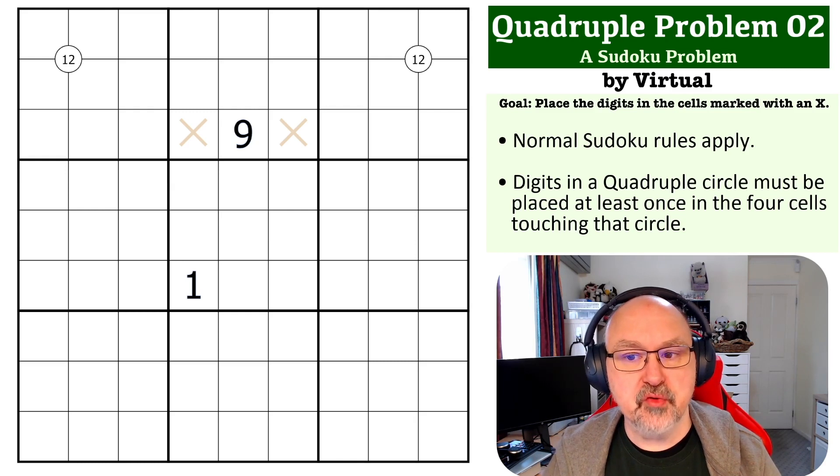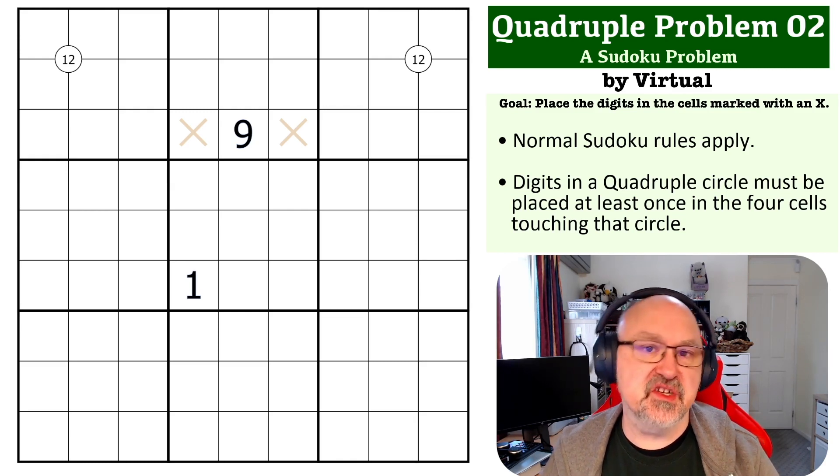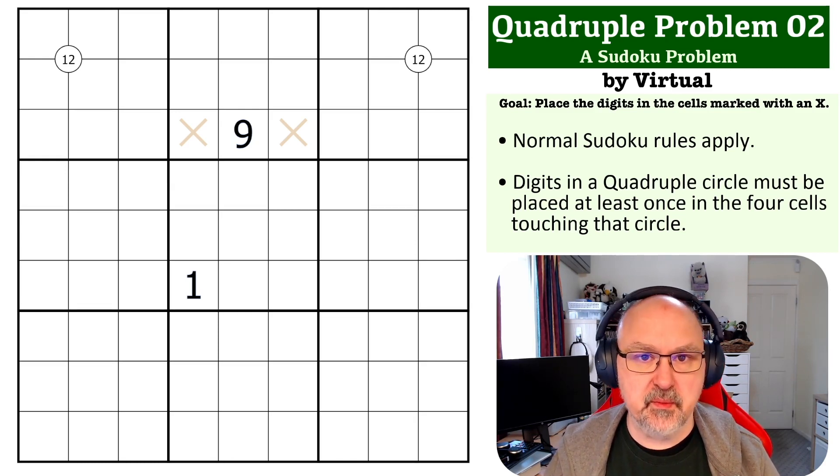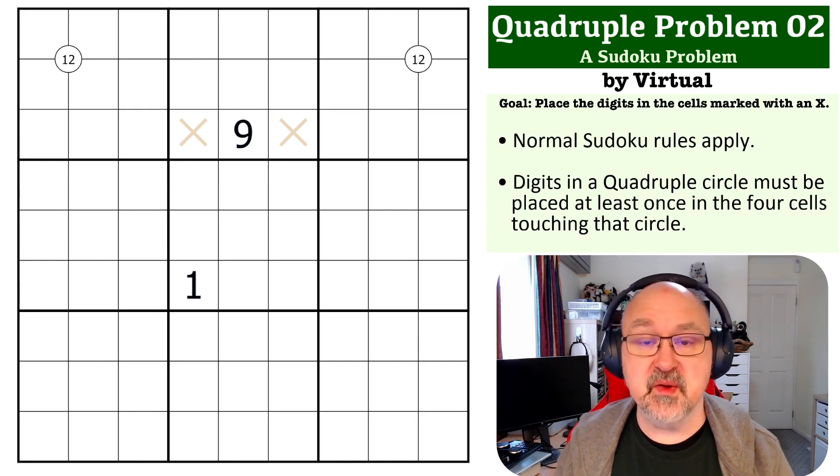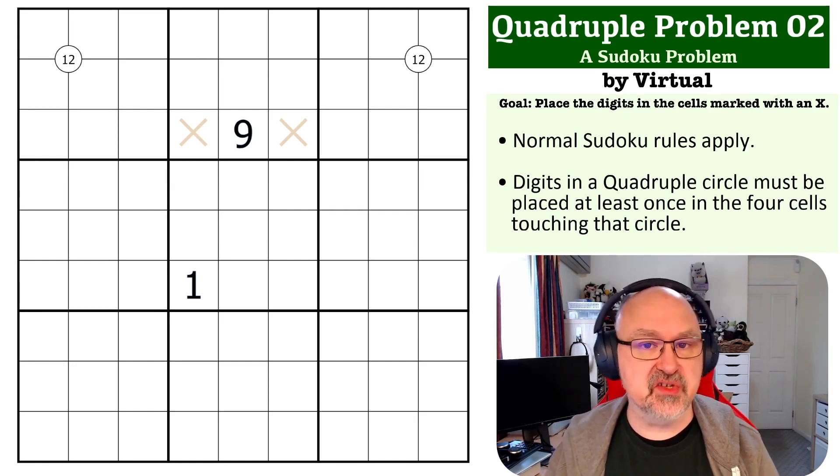So the rules of quadruples is any digit that is placed in a circle must be placed at least once in the four cells touching that circle.